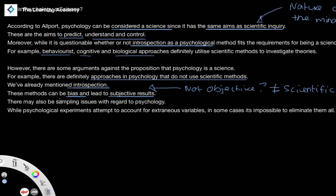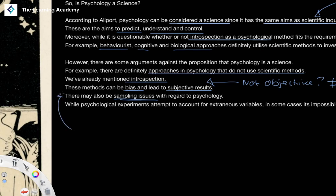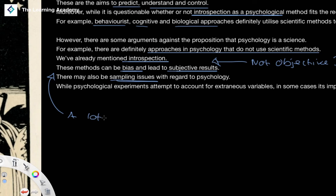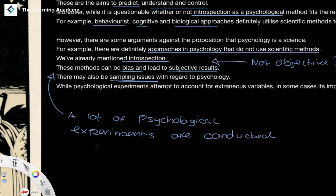There are also issues when it regards to sampling and sample sizes with regard to psychology. A lot of psychological experiments are conducted with small sample sizes, and what this means is it's conducted with a small number of individuals. So if we were to do a psychological experiment with 5, 10, 15 people,